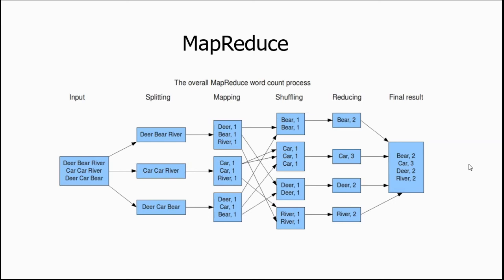In this slide you can see that we have several stages like input, splitting, mapping, shuffling, reducing, and the final result. Let's say that you have a text file and you want to count the number of words — find out the frequency of each word. In the splitting part, a particular file has been divided into three parts: 'dear bear river', 'car car river', and 'dear car bear'.